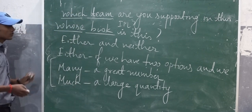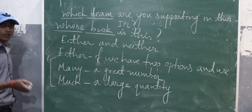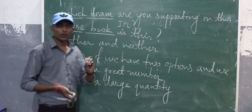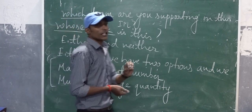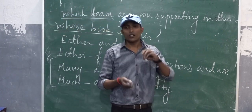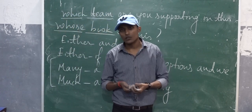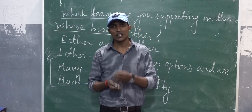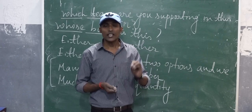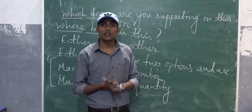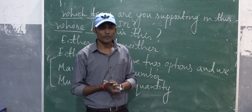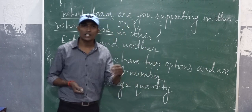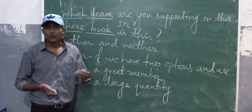The last one is interrogative determiners. All WH words are called interrogative determiners — like how much, how many, which, and whose.